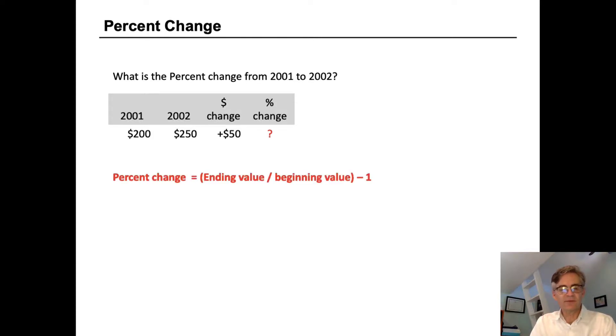That's also fairly straightforward. The percent change is always your ending value divided by your beginning value minus one. So in this case, it's 250 divided by 200 minus one, or 1.25 minus one, which gets us 25% change from 2002 over 2001.